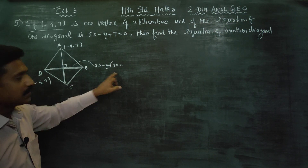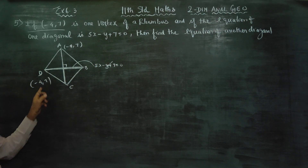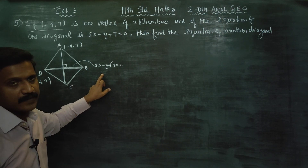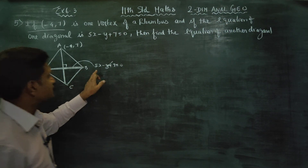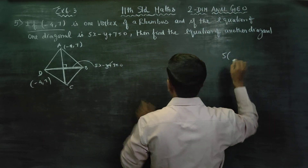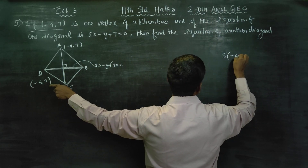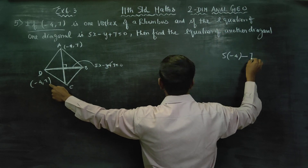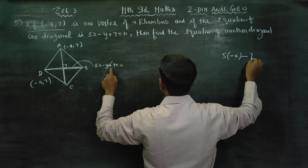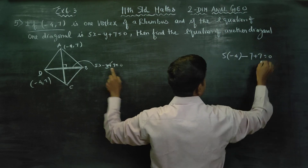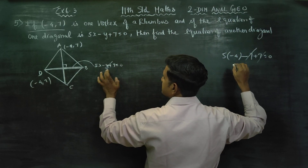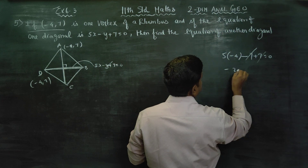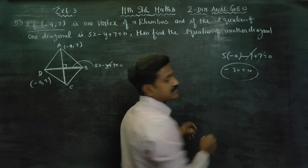Now, we can substitute it. If a point lies on a line, it must satisfy that line's equation. Substituting: 5 times x (minus 4) minus y (minus 7) is equal to 0. You get minus 7 is equal to 0.